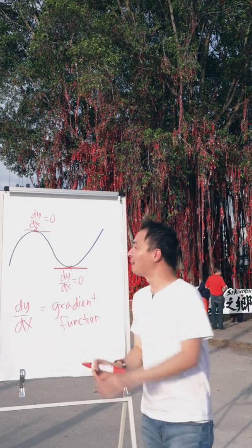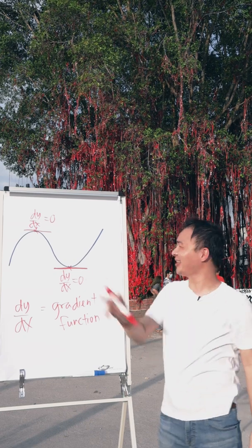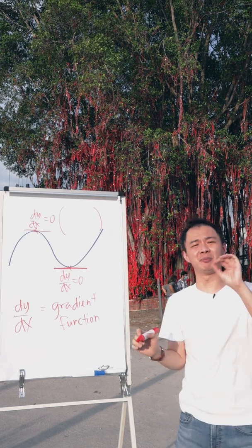Then now you have a second problem. Because both of them also have dy/dx equal to zero, how are you going to differentiate whether it's maximum or minimum? So therefore they came up with another rule to differentiate whether it's maximum or minimum.